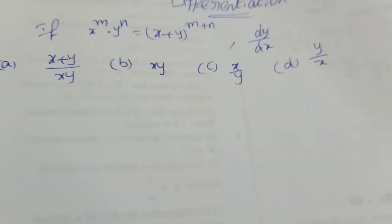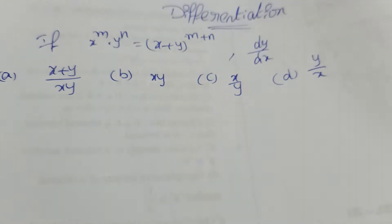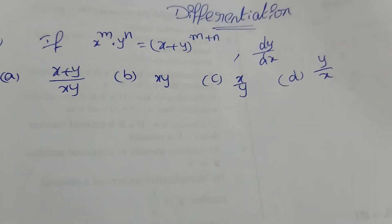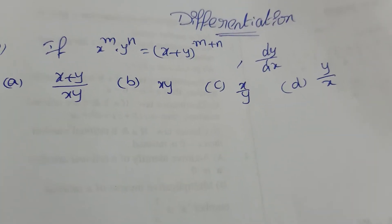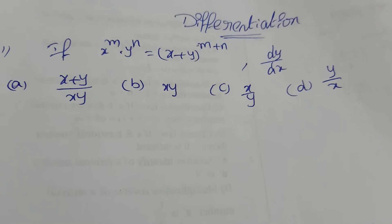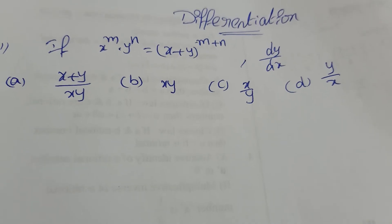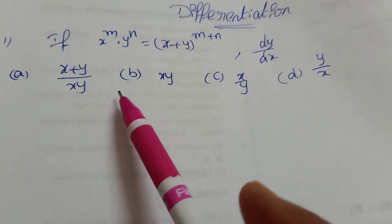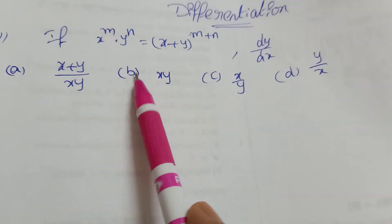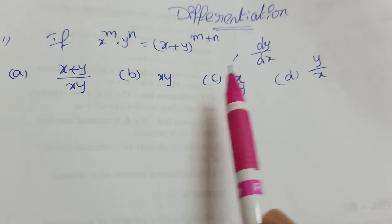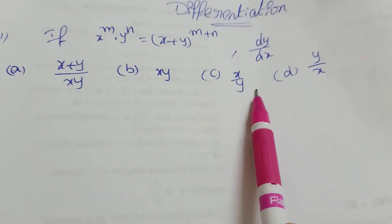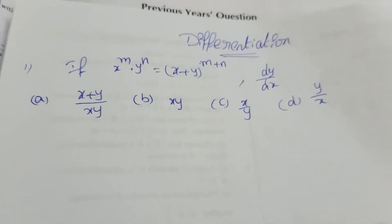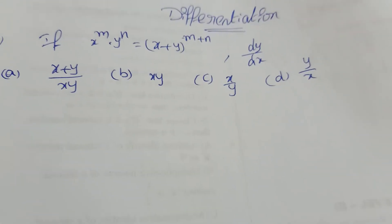If x power m into y power n equal to x plus y whole power m plus n, find dy by dx. Options are given: x plus y by xy, xy, x by y, y by x.